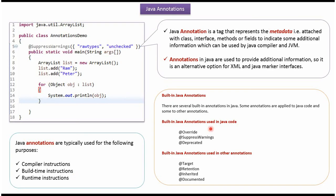There are several built-in annotations in Java. Here you can see built-in annotations which can be used in Java code: @Override, @SuppressWarnings, and @Deprecated. Here you can also see built-in annotations which can be used in other annotations: @Target, @Retention, @Inherited, and @Documented.